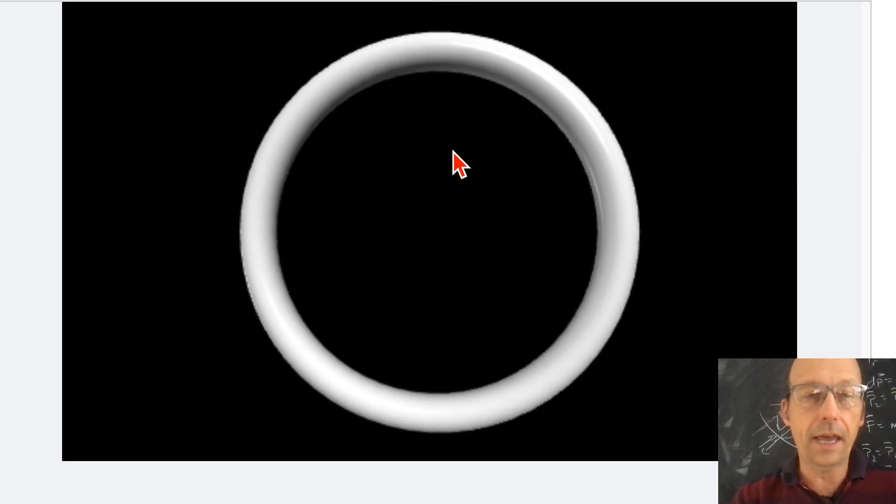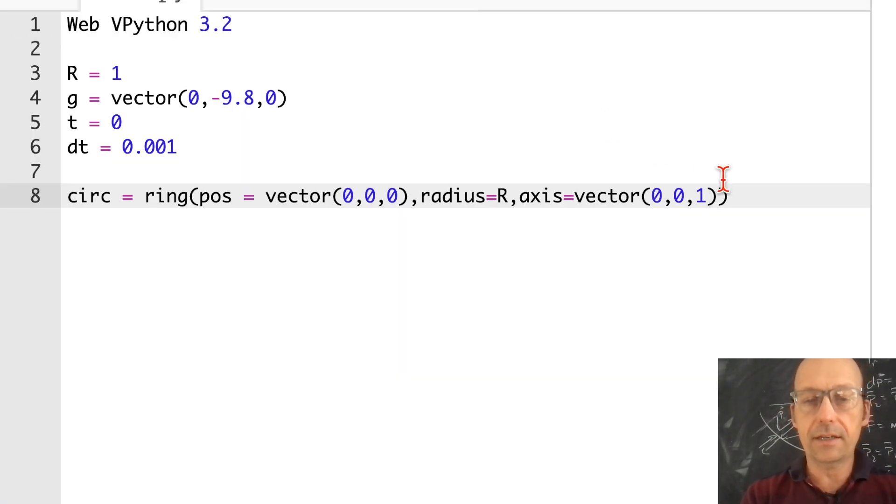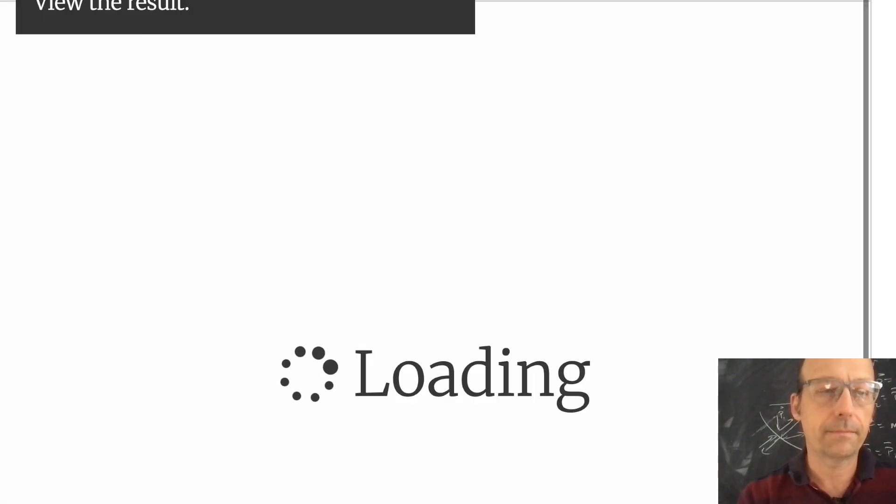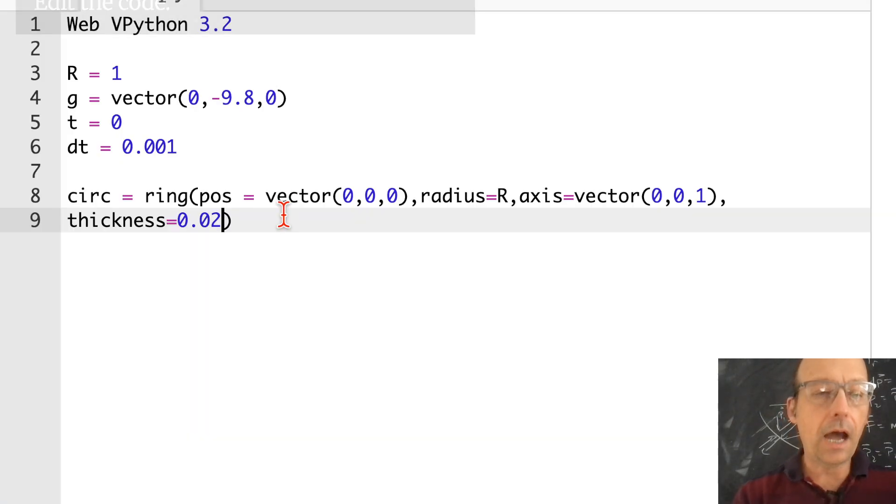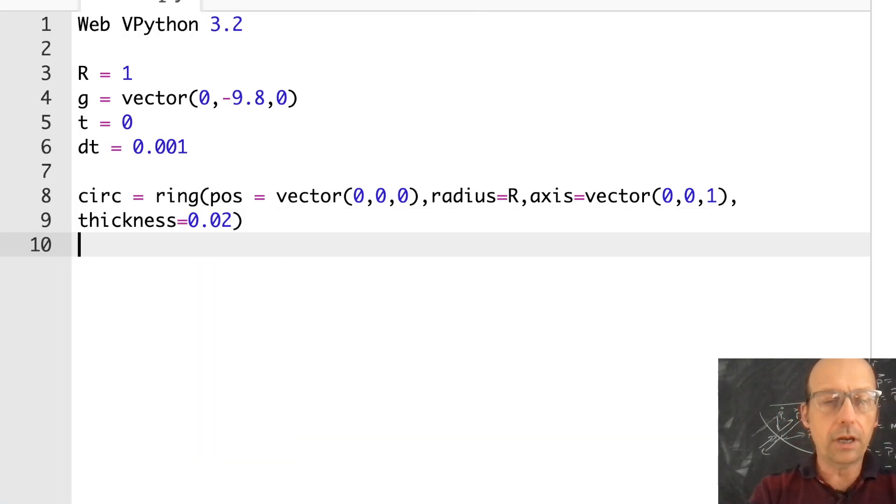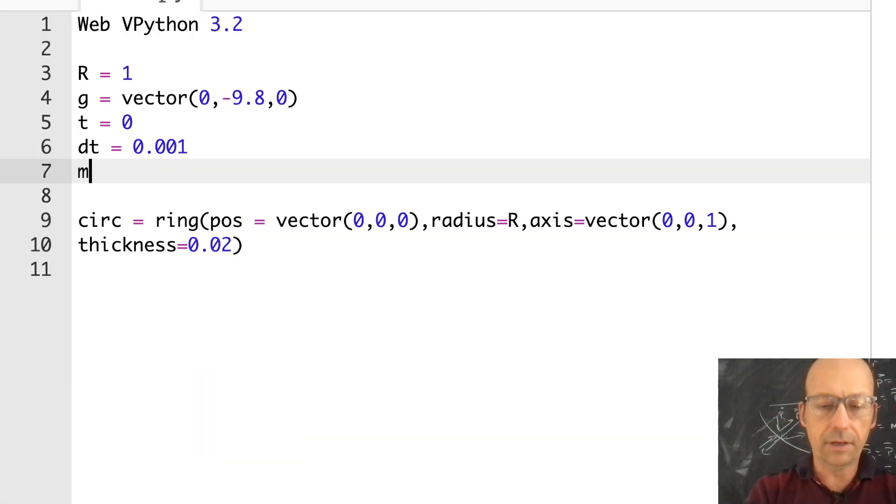So there's my ring. It's too thick. So we can change the thickness of it. Thickness equals 0.02. Let's try that. Okay. That's good. Now I'm going to make my two spheres. Oh, they do need a mass, too. Let's just give it, it doesn't really matter, actually. 0.1.